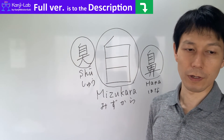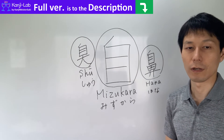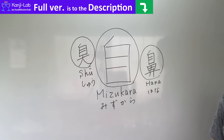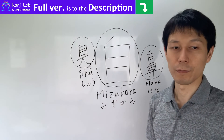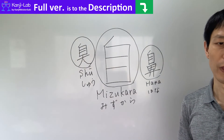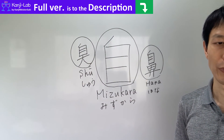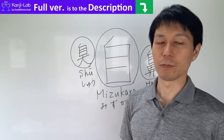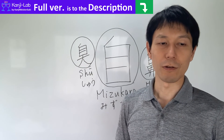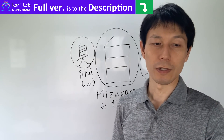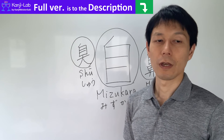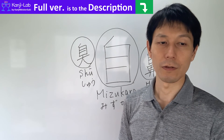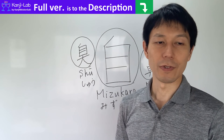In this first half of the program, I will introduce the origins of this radical and the kanji characters that belong to it. If you are on YouTube or Facebook and finished here, if you would like to see the full version, please check out Kanji Label in the description below. You can try it for free for 20 days. Of course, if you try it and decide you don't want it, that's fine. I look forward to seeing you on Kanji Label for the rest of the show.